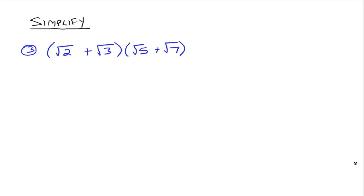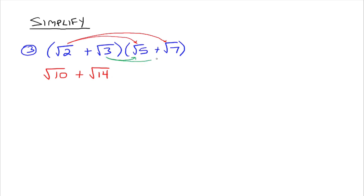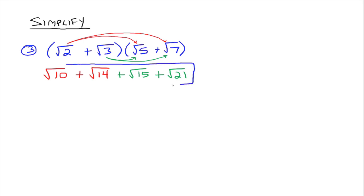Now what about multiplying a binomial times a binomial? We're just going to use the distributive property twice, like we did when multiplying x plus 2 times x plus 7. We take the square root of 2 and multiply it through: the square root of 2 times the square root of 5 is the square root of 10, and the square root of 2 times the square root of 7 is the square root of 14. Then the square root of 3 times the square root of 5 is the square root of 15, and the square root of 3 times the square root of 7 is the square root of 21. None of those simplify further, so this is the result of multiplying the square root of 2 plus the square root of 3 times the square root of 5 plus the square root of 7.